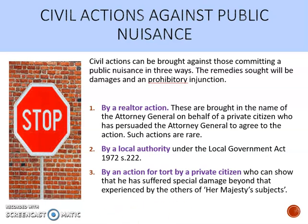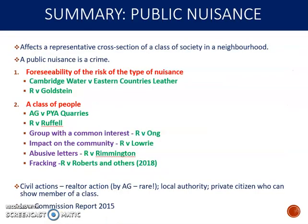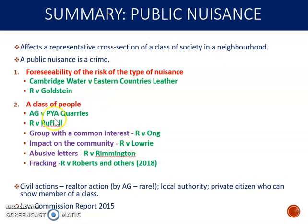To recap: public nuisance is a crime and a tort affecting a representative cross-section of a class in a neighbourhood. You must prove foreseeability and that a class of people has been affected. There are three ways to bring a civil claim. I would urge you to look at the Law Commission Report from 2015 to see how heavily criticised public nuisance has been in recent years.